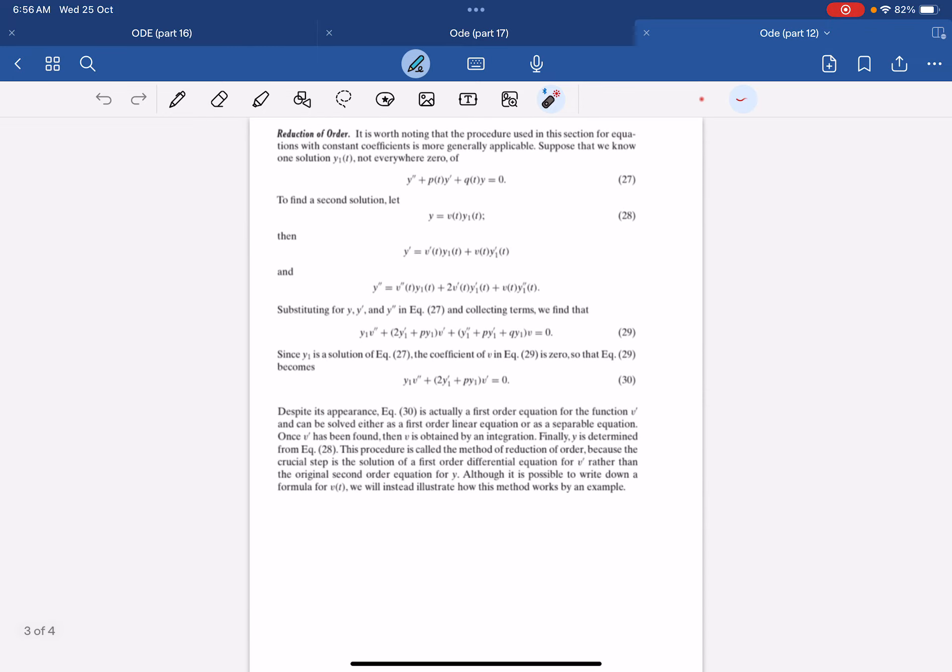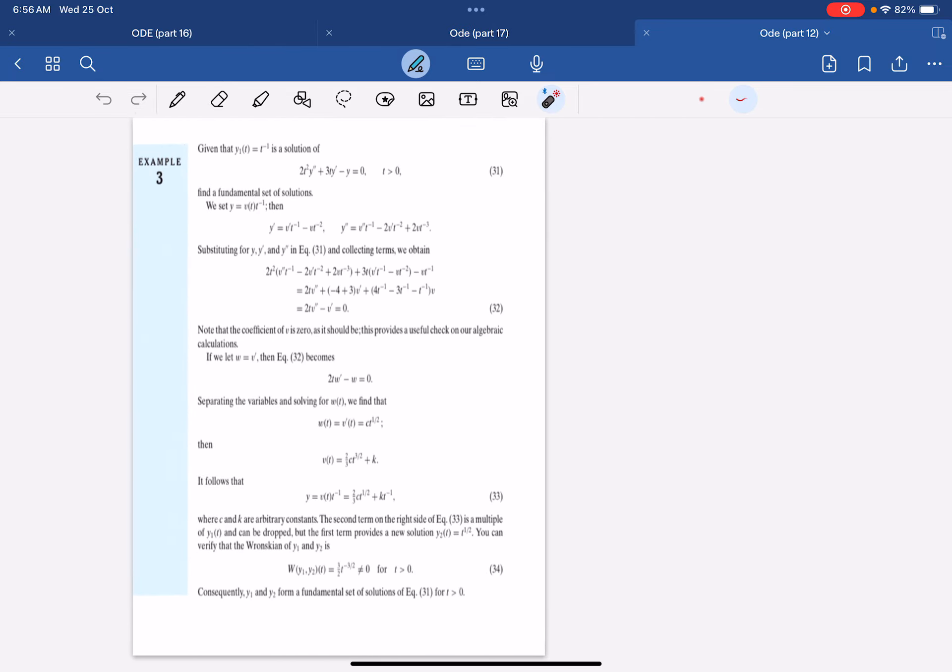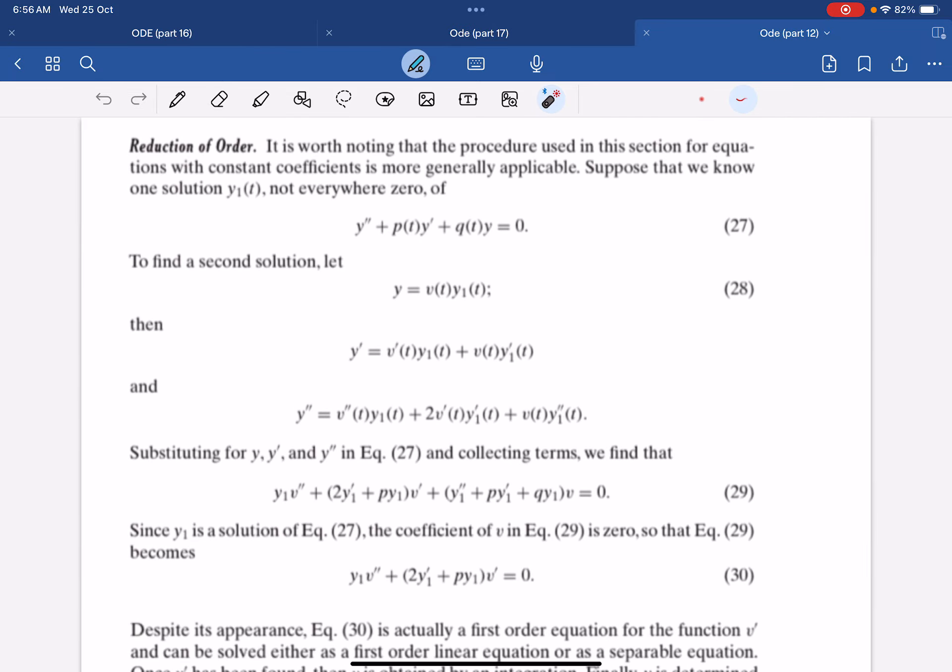This is the first method. The next method is known as the reduction of order. It is something similar as what we want now is to ensure our second order ODE becomes a first order ODE. How are we going to do that? We just want to find a second solution. What we need is to let y equal to a function in terms of t times y1.